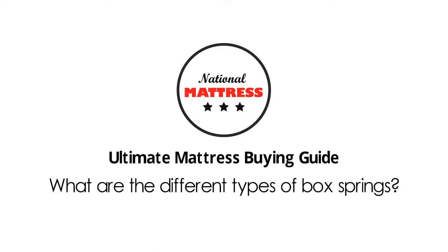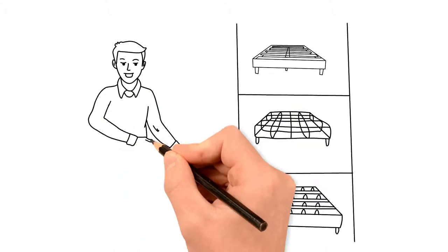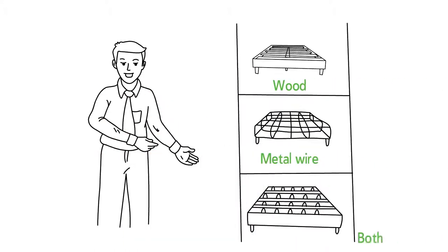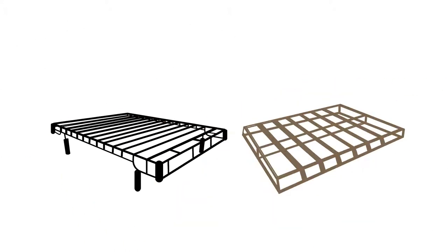What are the different types of box springs? Box springs are usually made of wood or metal wire or both. Typically, wooden box springs are heavier than metal box springs.